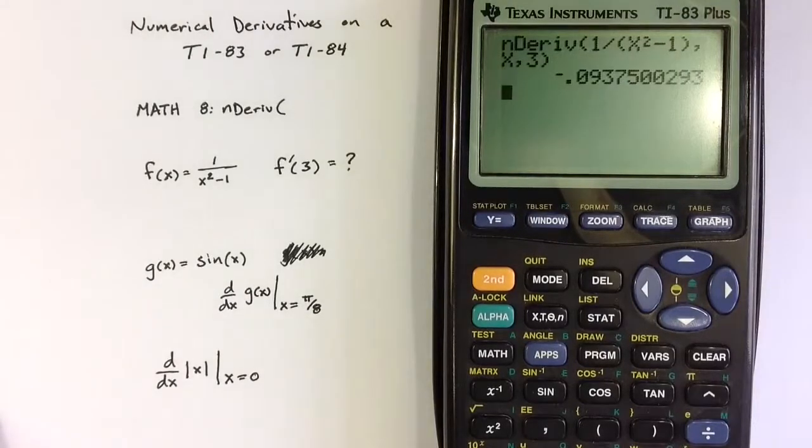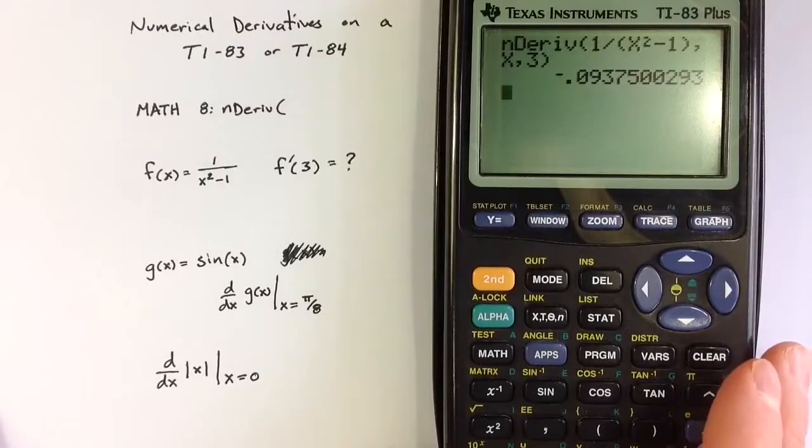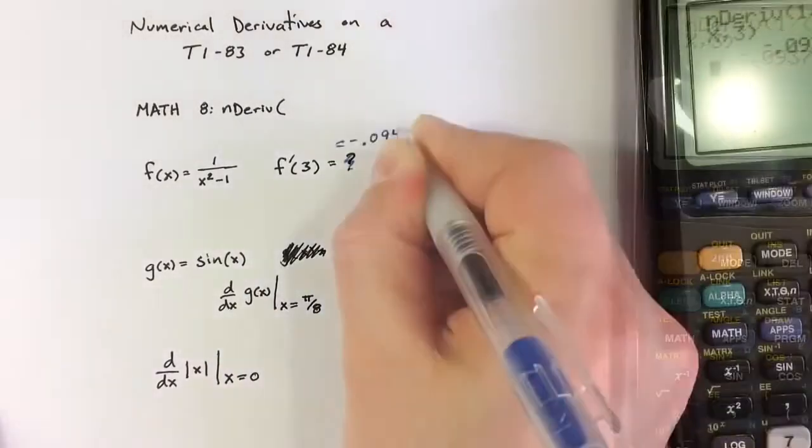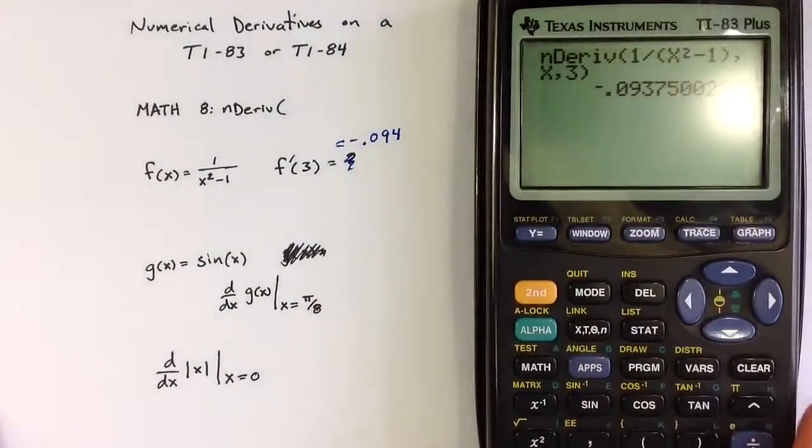The command will go through a series of calculations, and what it just found for us is that the derivative is roughly negative 0.093, or let's say 0.094.